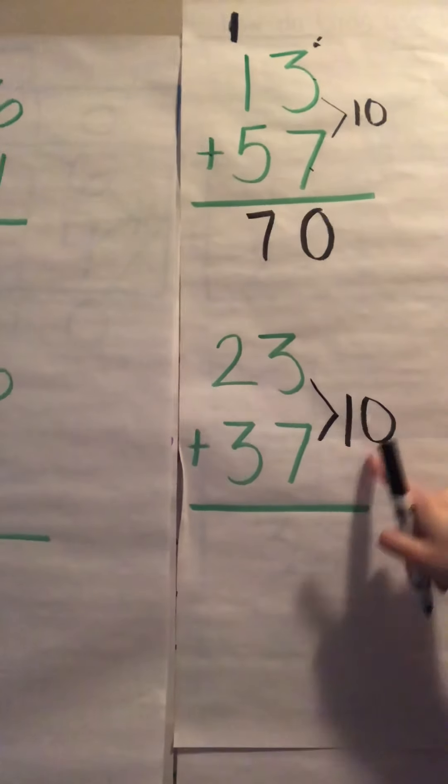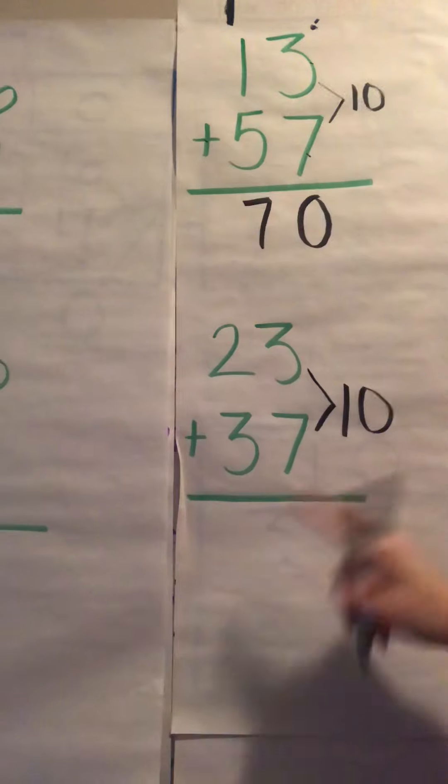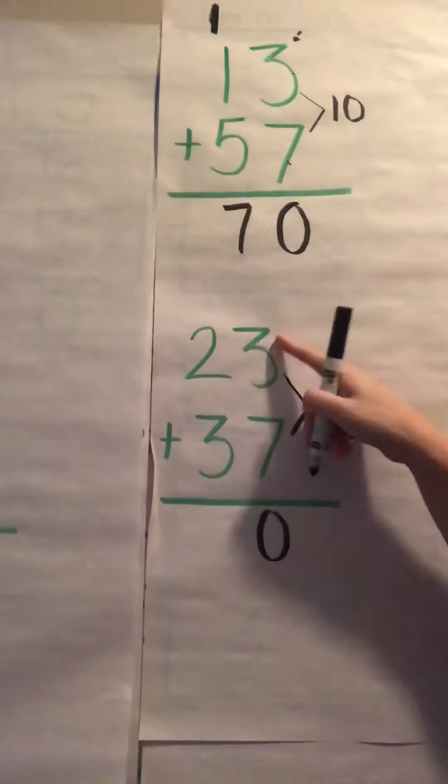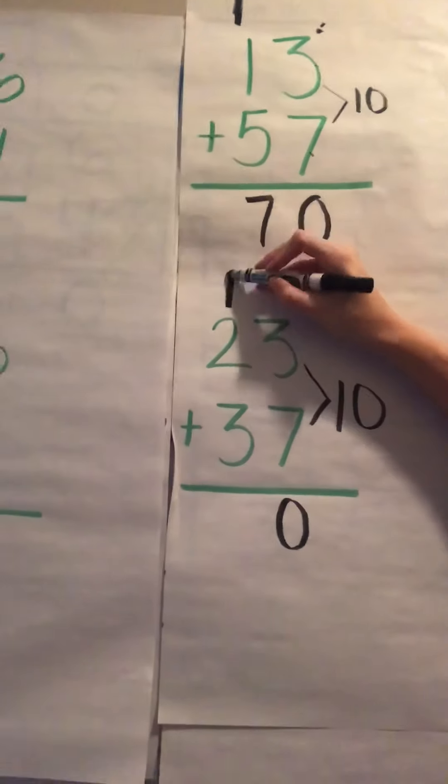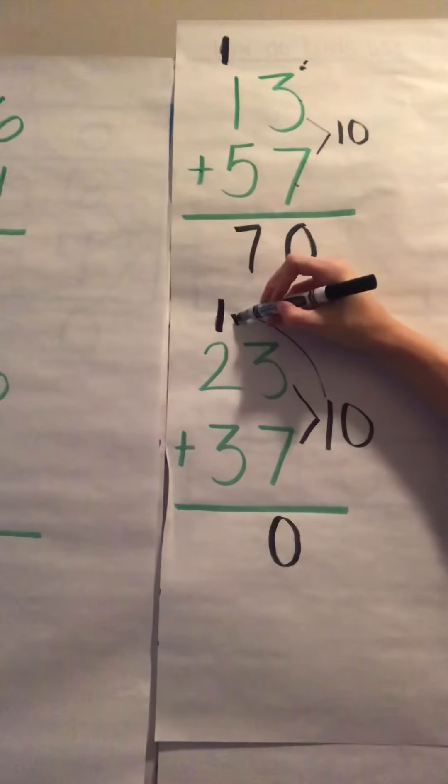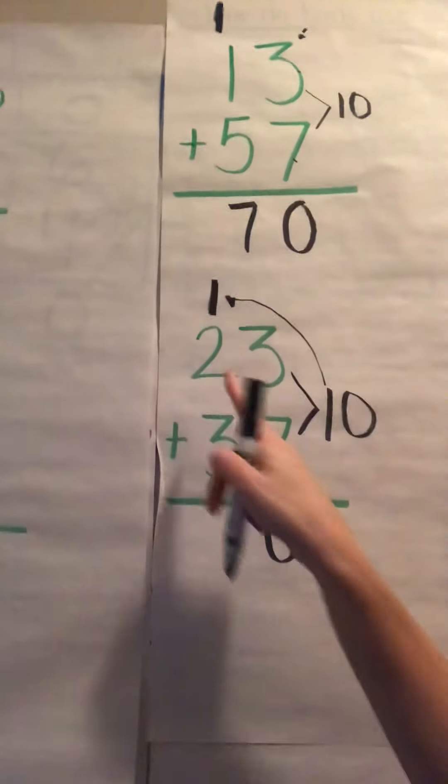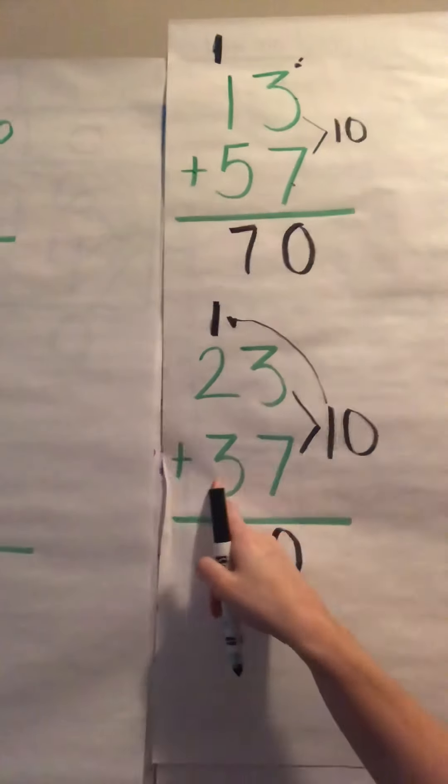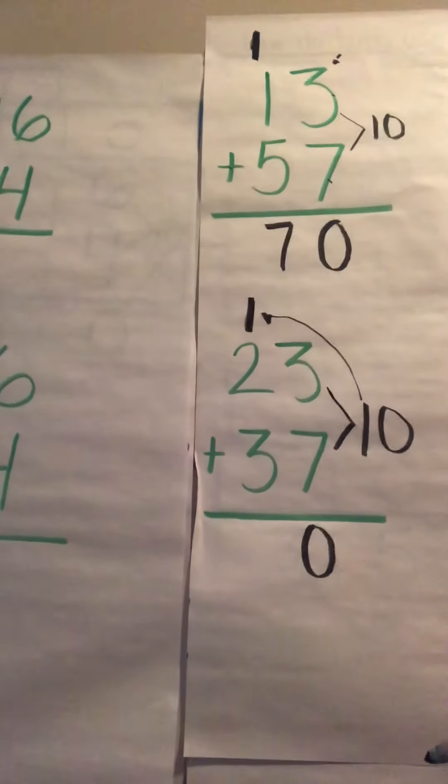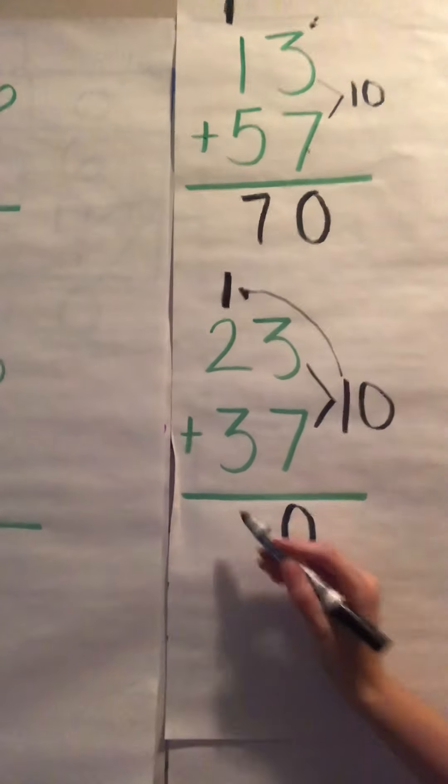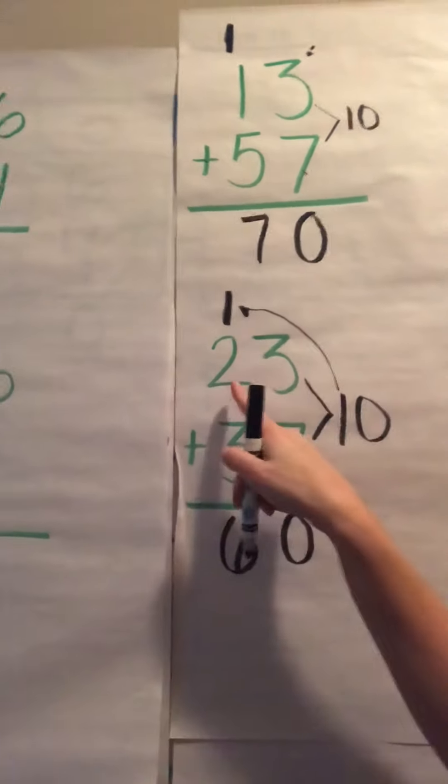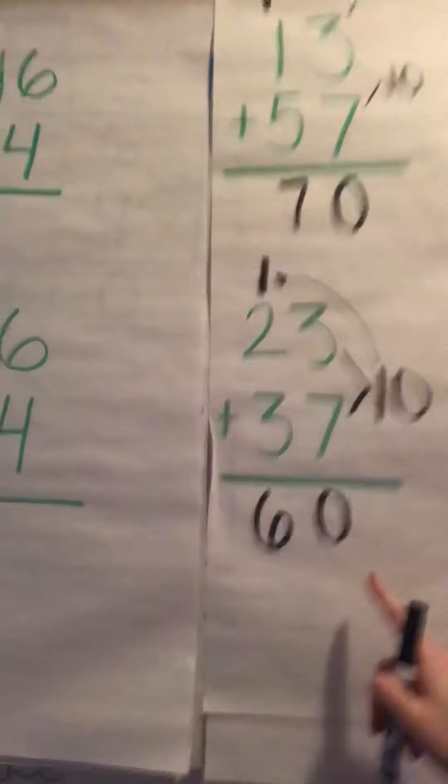And which one do we put below? Right, the 0 because this is for our ones place. And where does the 1 go in the 10? Right, we carry it over top in our tens column. Now we add our tens. We have 2 plus 3 equals 5 plus our 1 more equals 6. So 23 plus 37 equals 60.